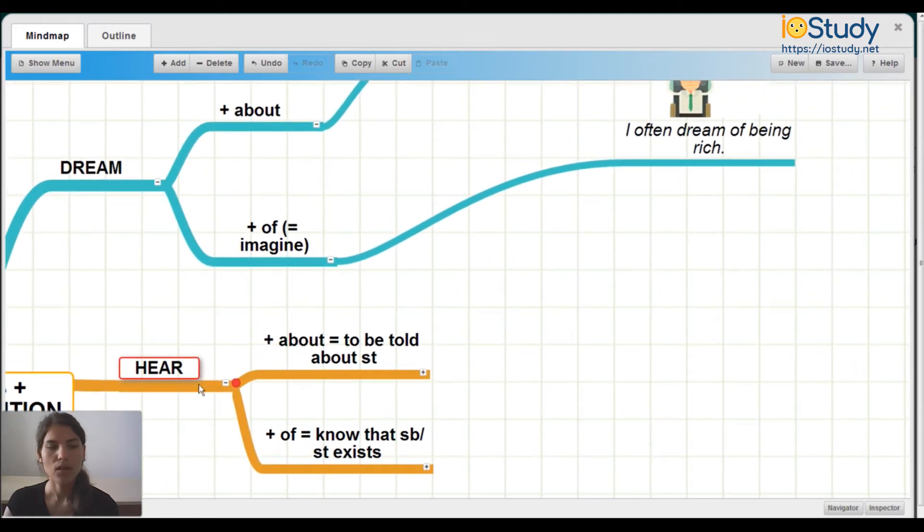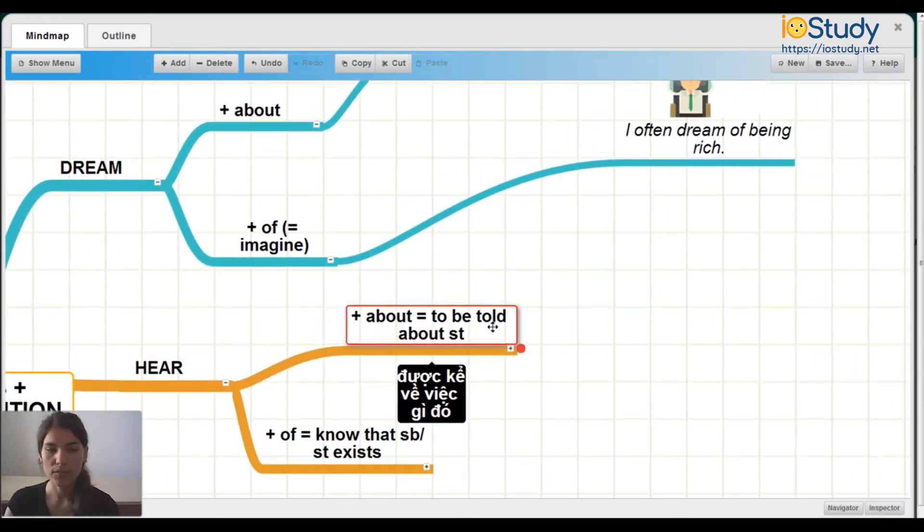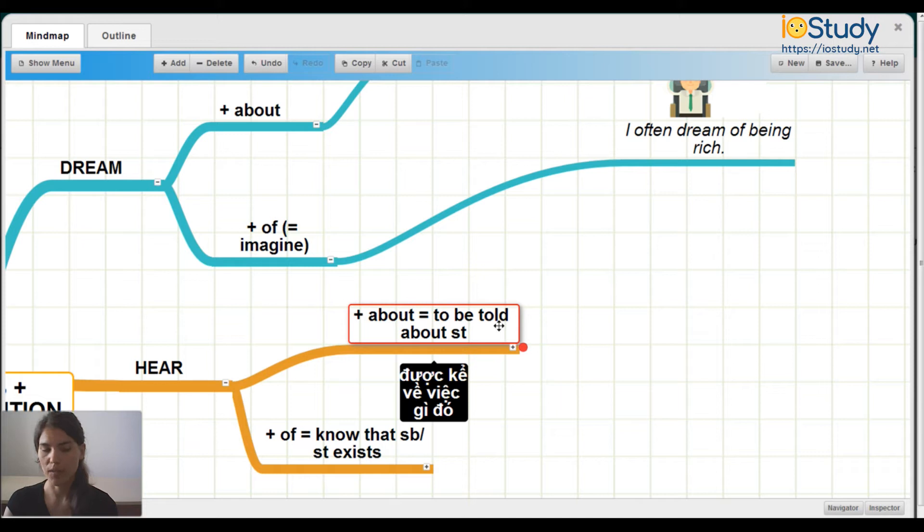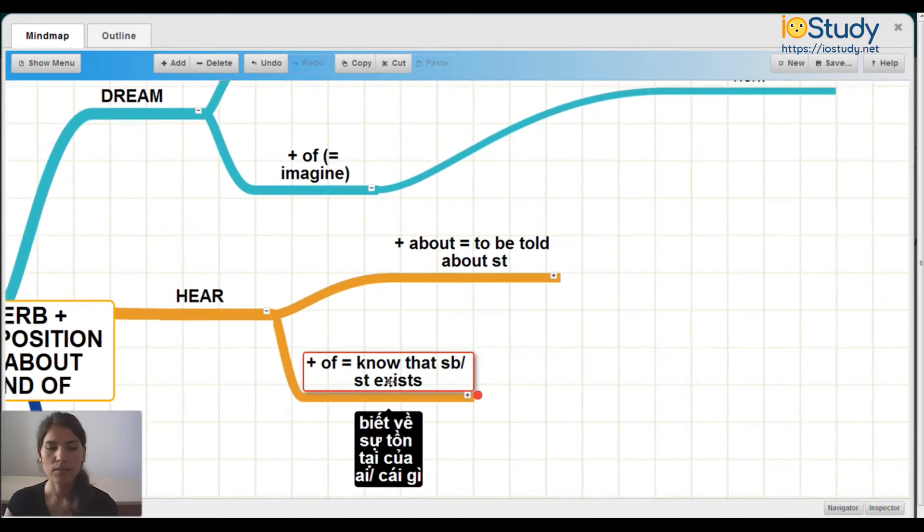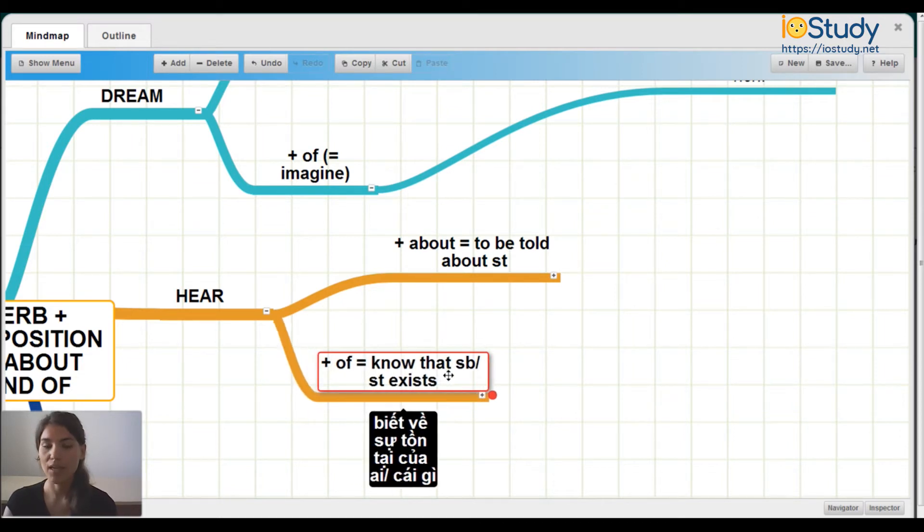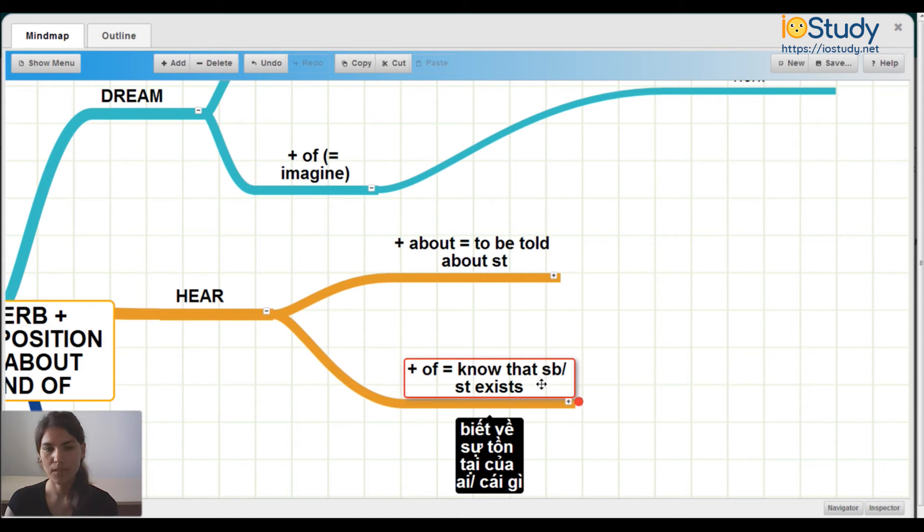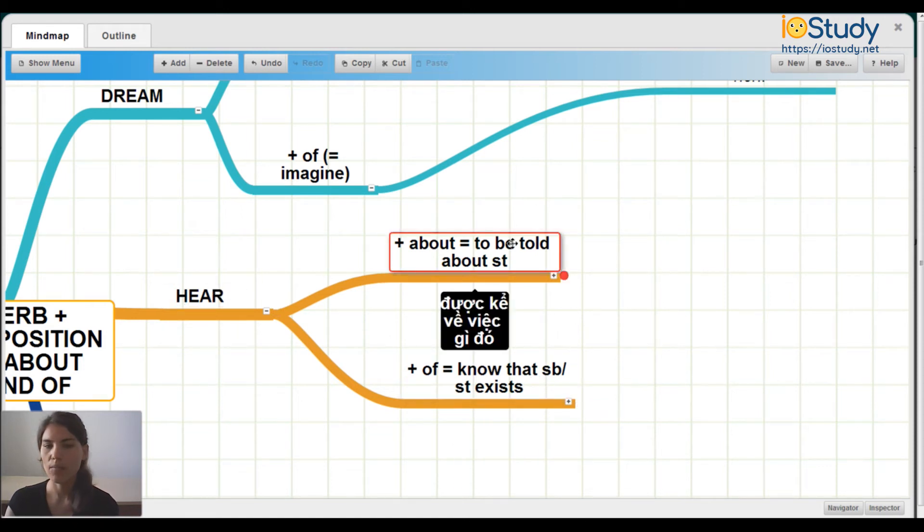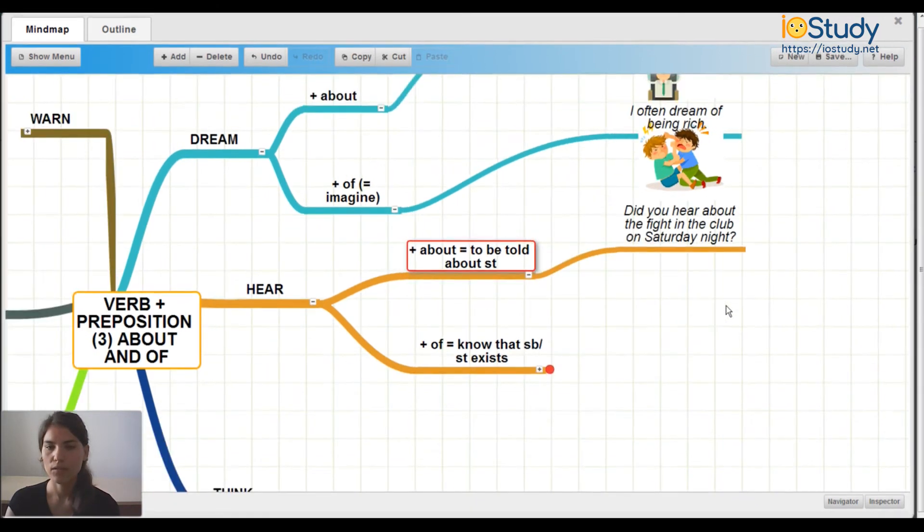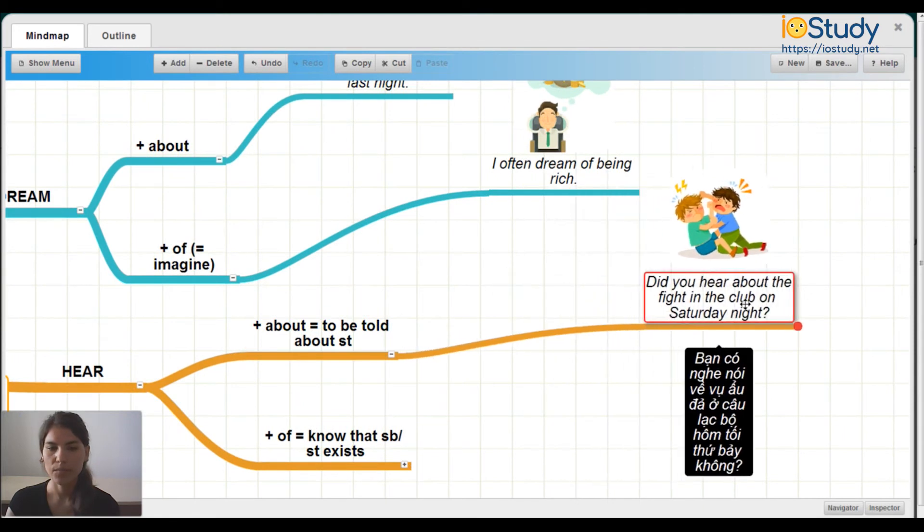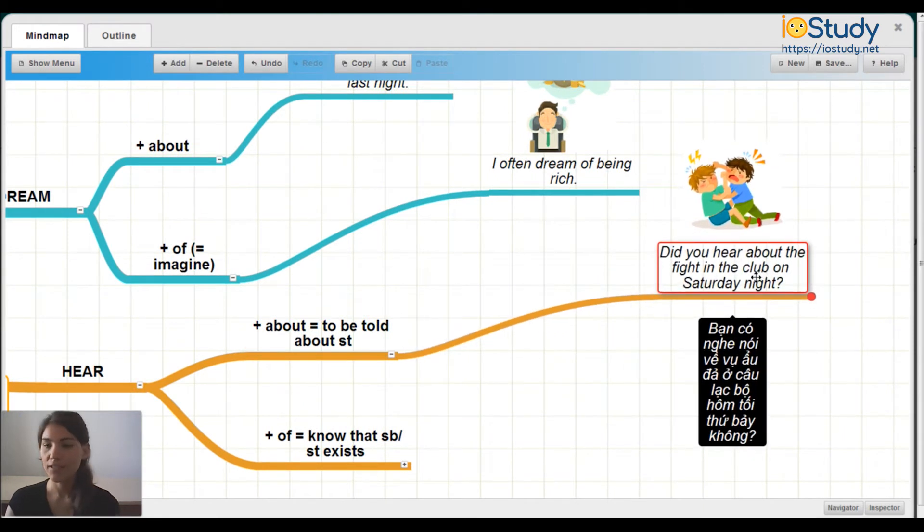Hear. To hear about is to be told about something, and to hear of means to know that somebody or something exists. Let's talk about hear about. Here's an example: Did you hear about the fight in the club on Saturday night? This means to be told about.